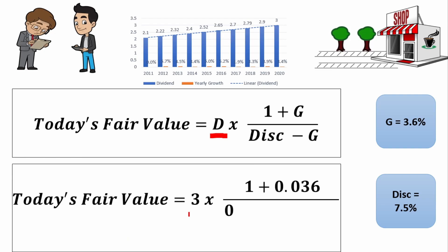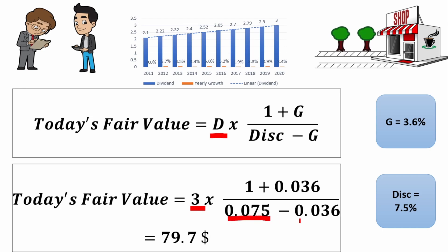Let's apply it to Joe's company. We take today's fair value: we start with the expected dividend of $3, multiplied by 1 plus 0.036 (a 3.6% increase), divided by the discount rate of 7.5% minus the dividend growth rate of 3.6%. We come up with a fair value for Joe's company of $79.70. Woah — I'm running to buy Joe's stock! This is an excellent investment!